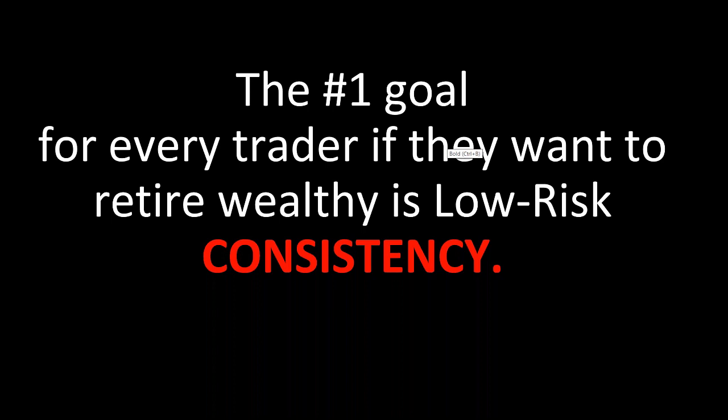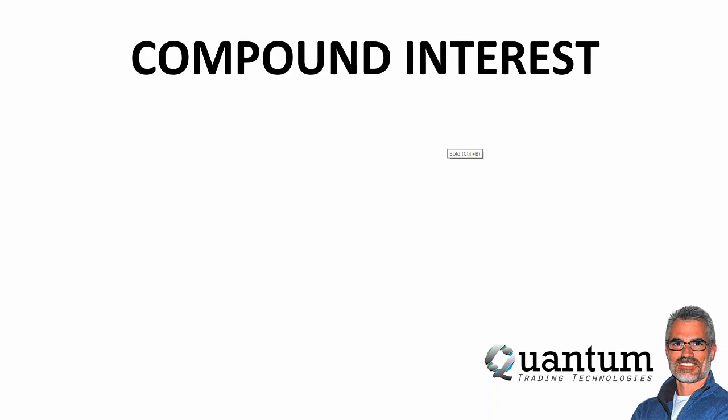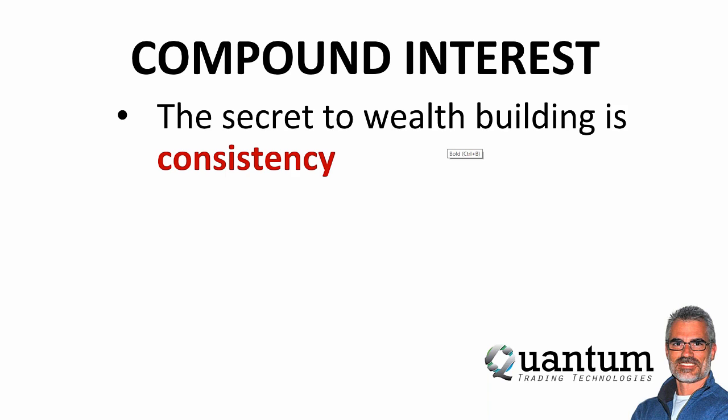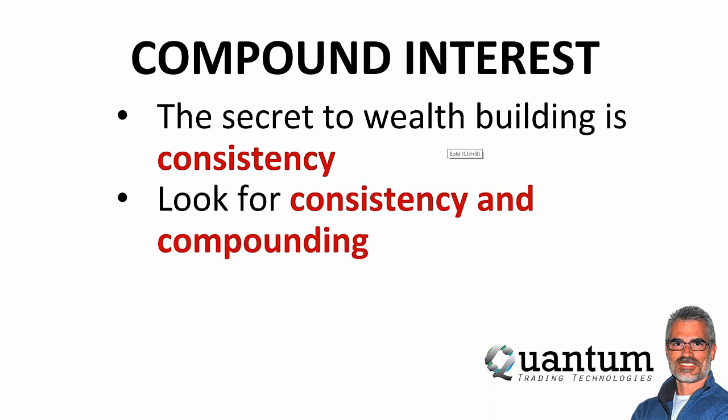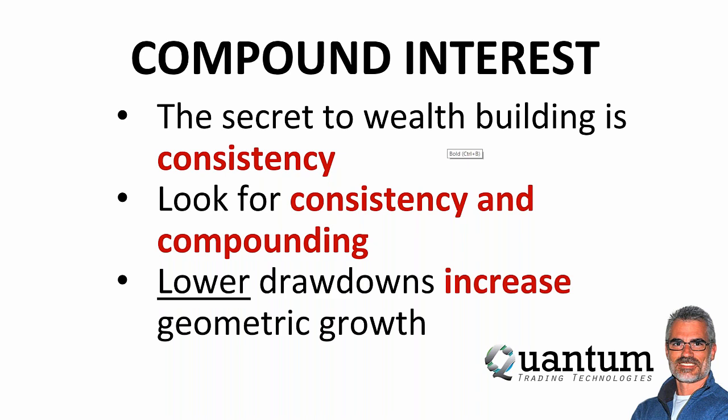The number one goal with regard to profits — actually, your number one goal overall in trading is survival. You have to survive first. If you survive long enough, you'll eventually figure out how to achieve that $10, $20, $30 a week. Once you get past that, the number one goal with regard to your profits should be low-risk consistency. That is one of the goals you should absolutely pursue. The secret to wealth building is consistency combined with compounding.